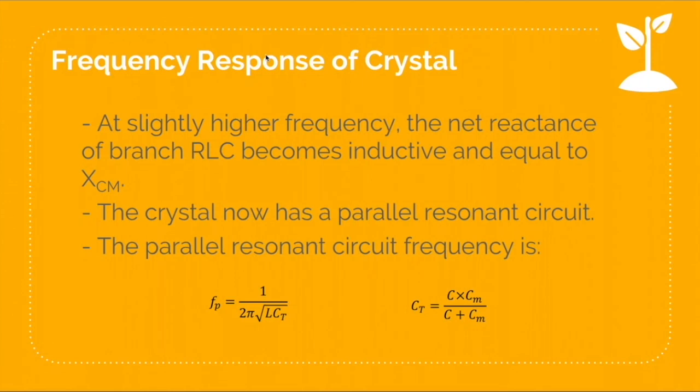For this condition, the crystal offers a very high impedance. The frequency at which the vibrating crystal behaves as a parallel resonant circuit is called the parallel resonant frequency, denoted by Fp, which is equivalent to 1 over 2 pi square root of L times C sub T, where C sub T is the ratio of the product of C and the mounting capacitance to the sum of the C and the mounting capacitance.